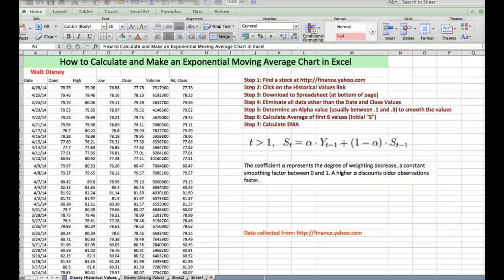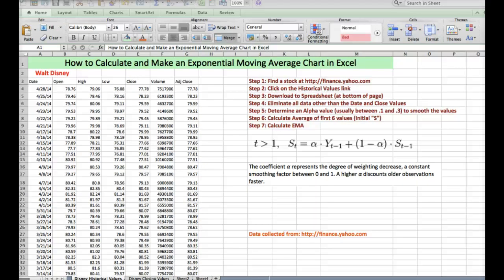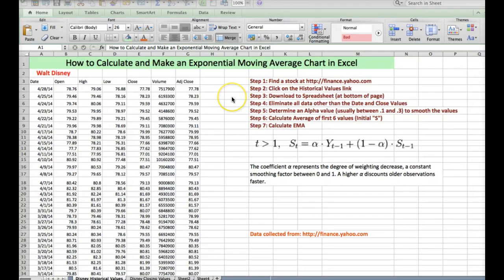Here's all the information that was downloaded. Now I've gone ahead and put in a title as well as the name of the company and I've put in some steps, the equation and then some things that the equation represents. Down here, my data was collected from finance.yahoo.com. That'll be beneficial for you to write down when you're looking for data. So take a minute and pause the video and write down the steps for how to calculate an exponential moving average in Excel.